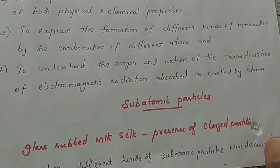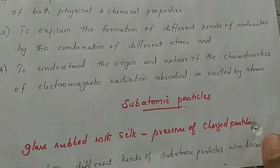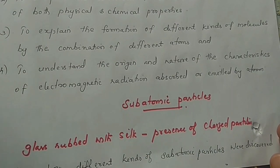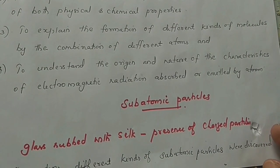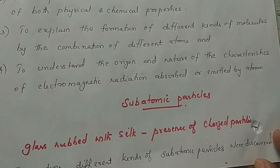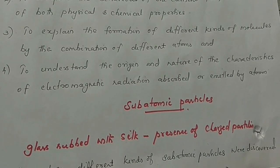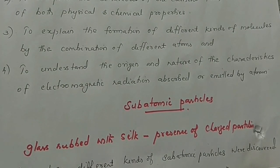This is the discovery of the electron through the discharge tube experiment. In this chapter on atomic structure, we will discuss the subatomic particles, their discovery, and their properties in detail.